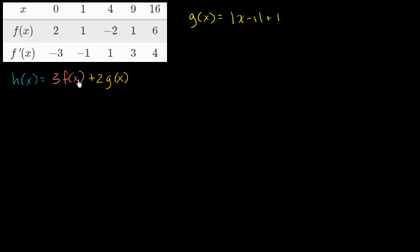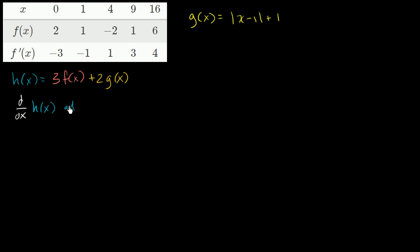We've been given some interesting information about the functions f, g, and h. For f, they tell us for given values of x what f of x is equal to and what f prime of x is equal to. Then they define g of x in terms of an absolute value expression, and h of x in terms of both f of x and g of x. What we're curious about is: what is the derivative with respect to x of h of x at x equals 9?